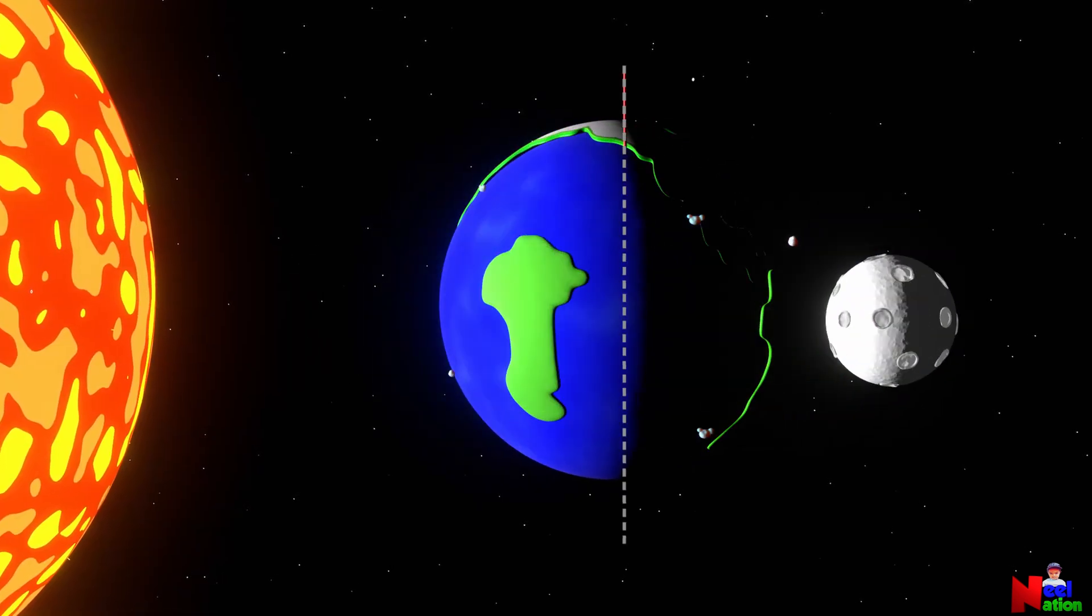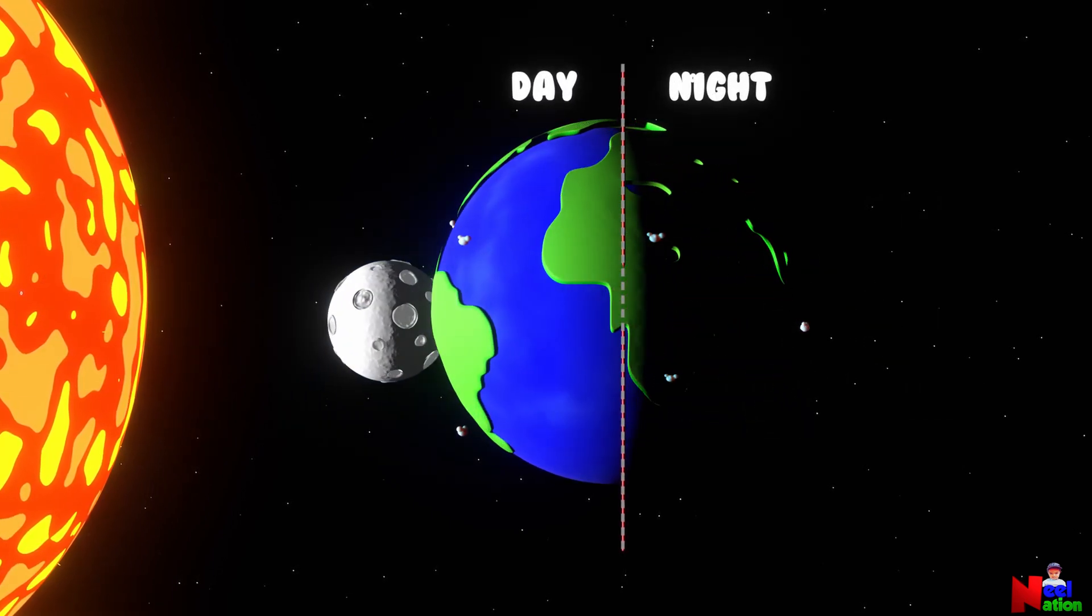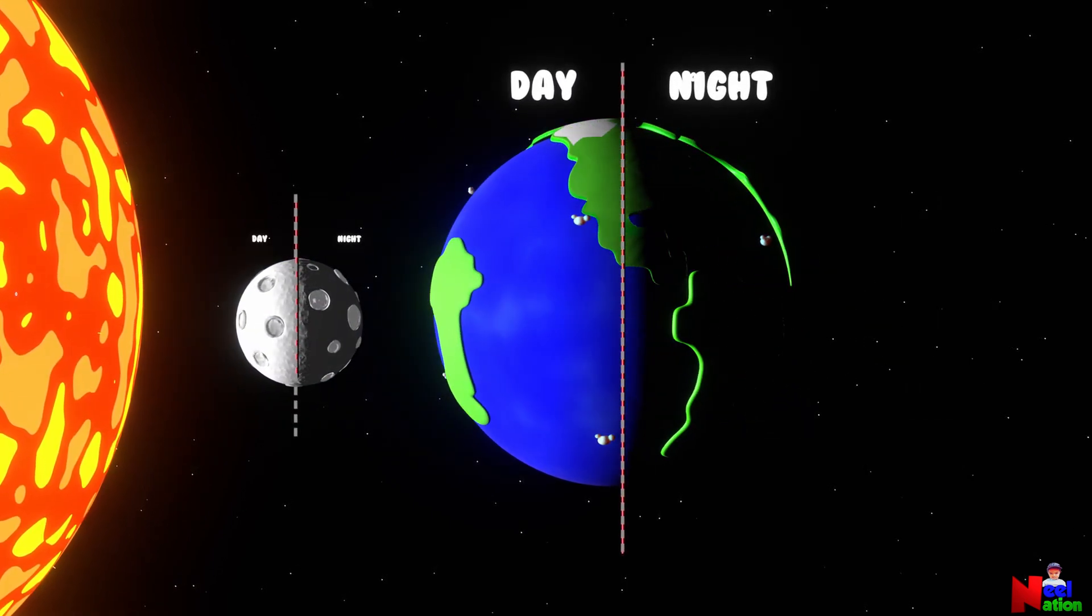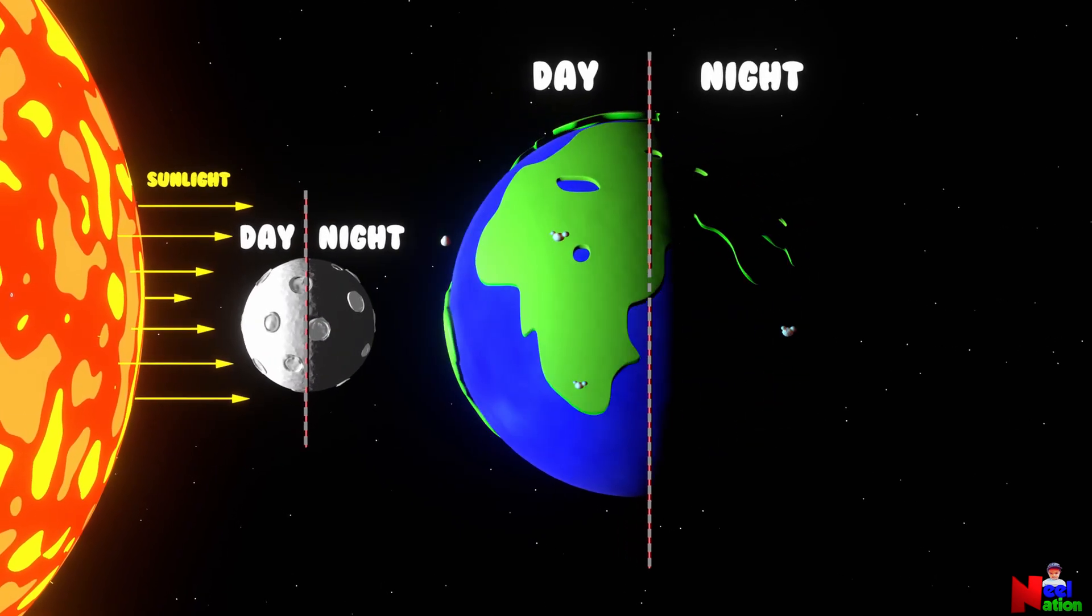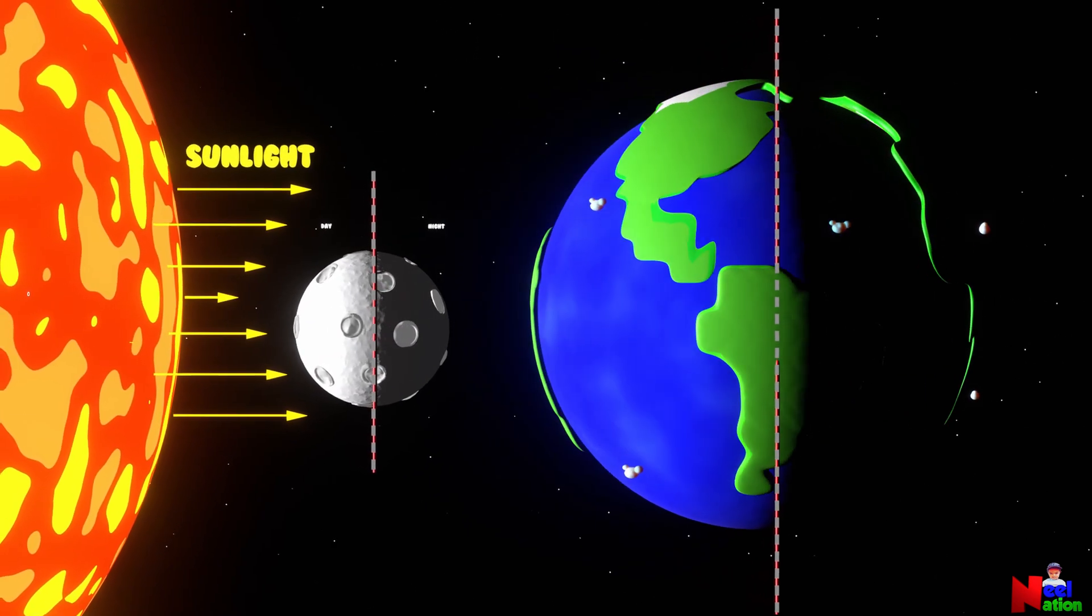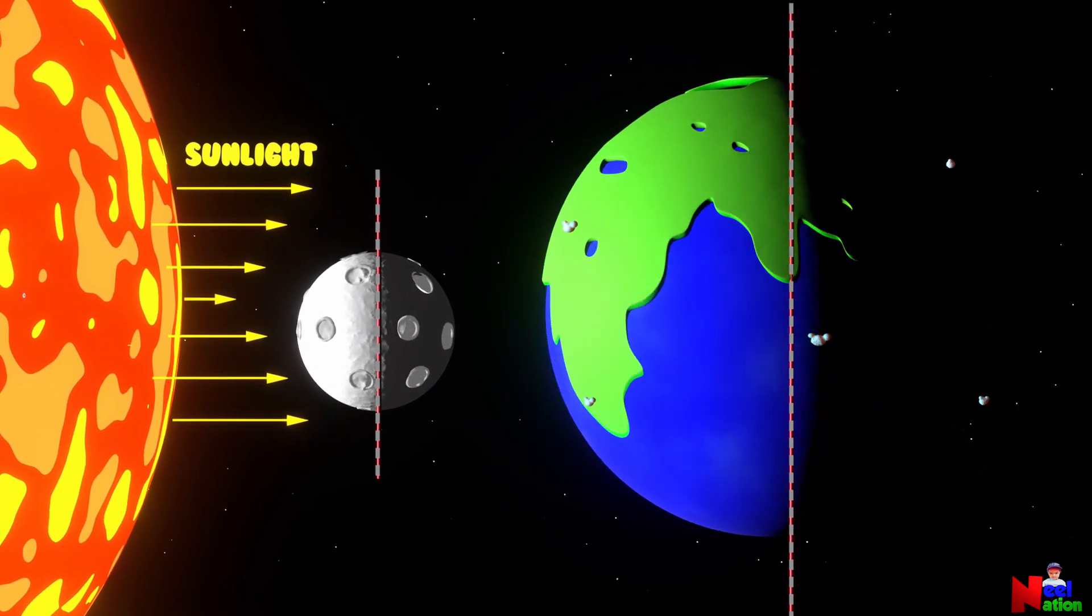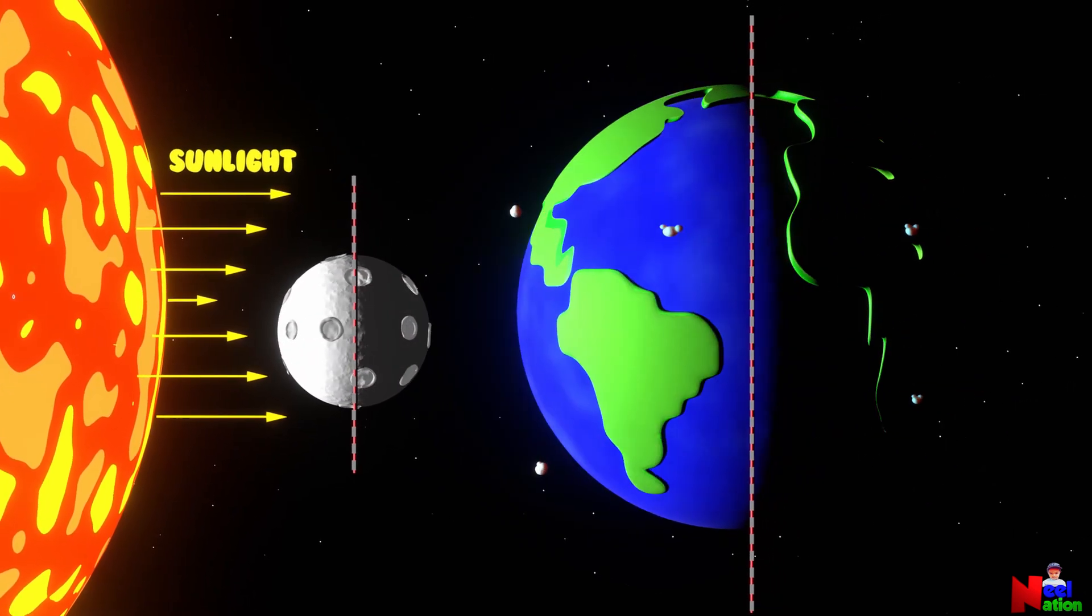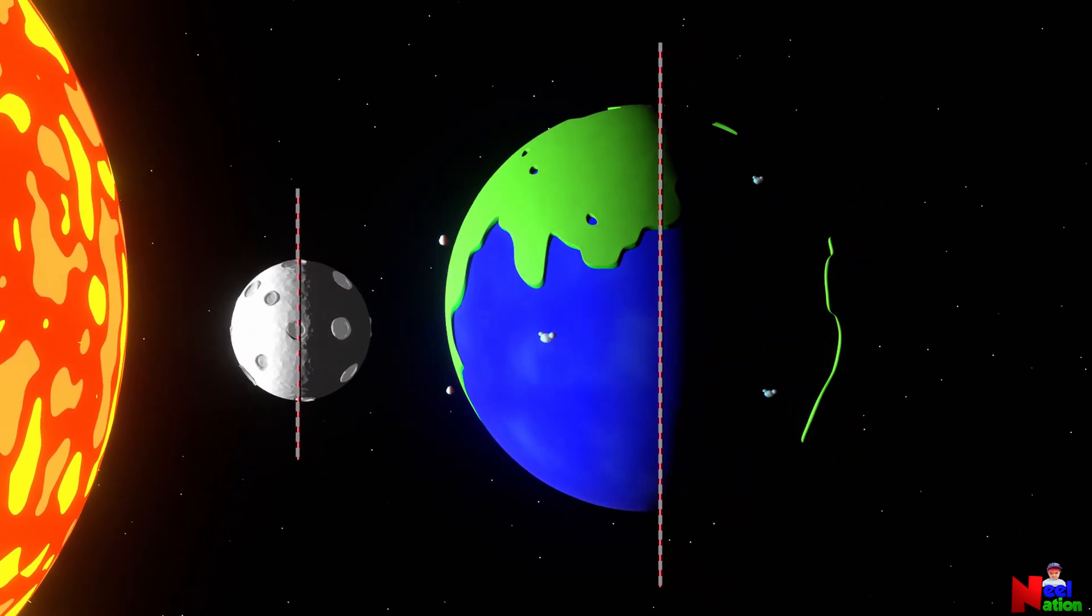Just like the Earth, the moon also has a day side and night side. The sunlight comes from one direction and it always lights up one half of the moon. Which means the side of the moon facing the sun looks brighter and the other side of the moon is dark.